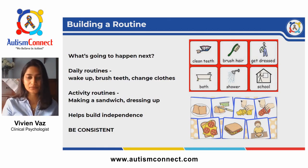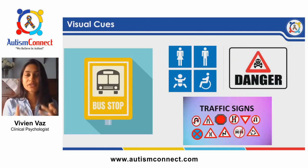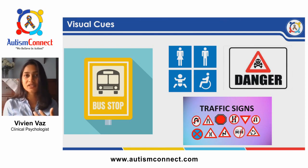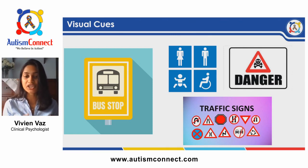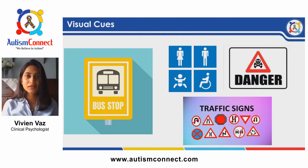This brings us to the next strategy: using visual cues. Imagine traveling to a foreign country and not speaking the local language — you navigate by relying on sign boards. In restaurants, signs show where the men's and women's toilets are. Danger signs on a meter box tell us to stay away. Traffic signs help us follow the rules when driving. These are all visual cues — tools we use in our day-to-day lives that we may not even realize.